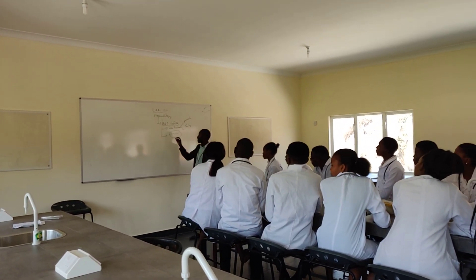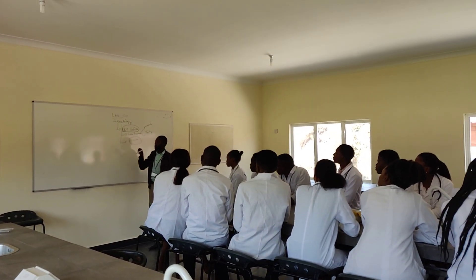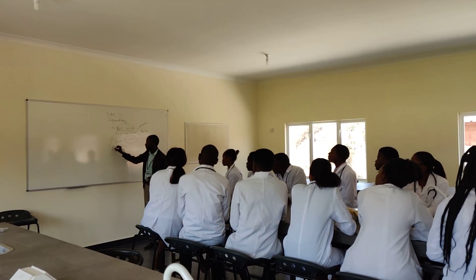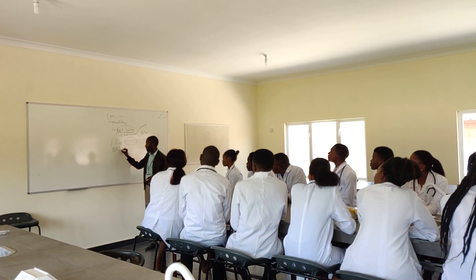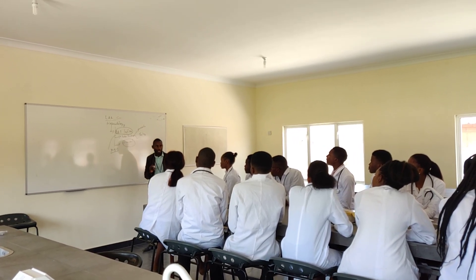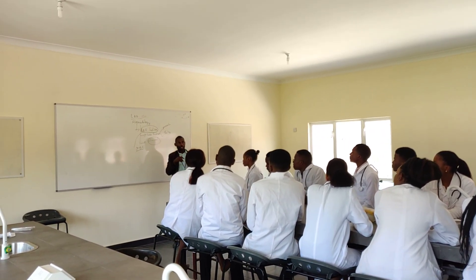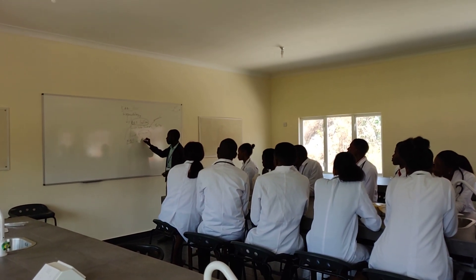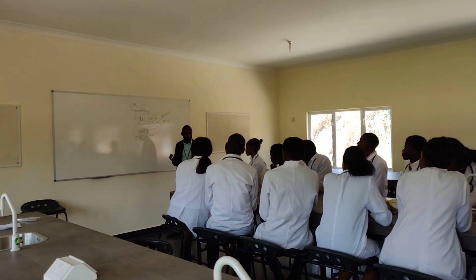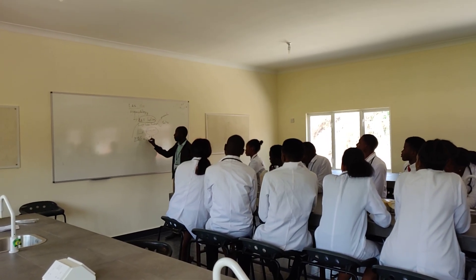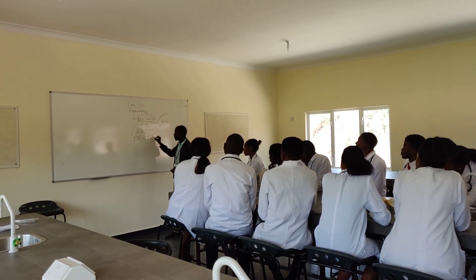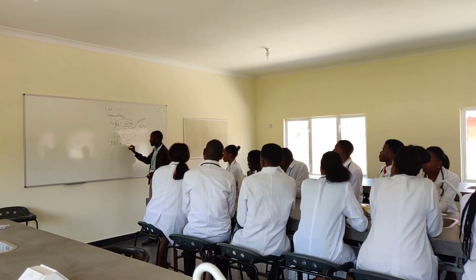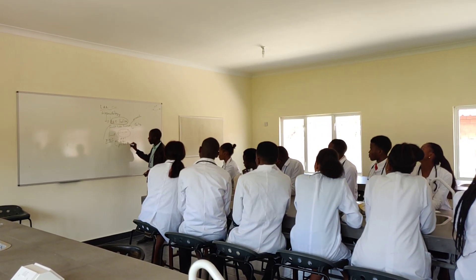We are looking at the red blood cell indices, meaning we are concentrating on a test which we call full blood count. This is a test where we are able to check all the blood cells, which includes the red blood cells, also known as erythrocytes, also the white blood cells, also known as leukocytes, and then we have the platelets, also known as thrombocytes.